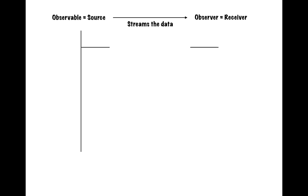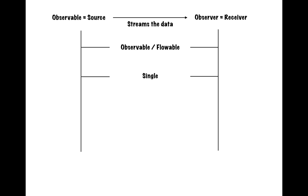Now, on the basis of data types, observables are currently divided into four types. The first one is observable or flowable. The second one is single. The third one is maybe. And the fourth and final one is completable. All these four are part of the observable source data source, and we will discuss each and every one in a proper manner.